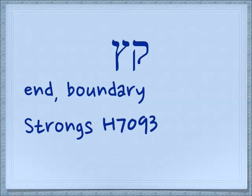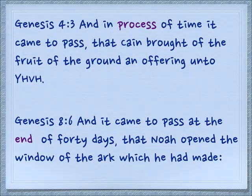They make a word by themselves: 'ketz,' which means the end of something or the boundary of something. We see in Genesis 4:3 — in the process of time, sometimes we talk about it as the end of that period of time — it came to pass that Cain brought of the fruit of the ground an offering unto Yehovah. Obviously it wasn't the end of time, but it was the end of a period of time.